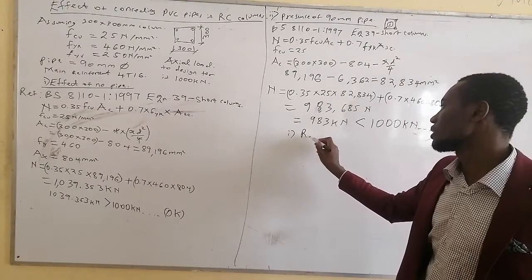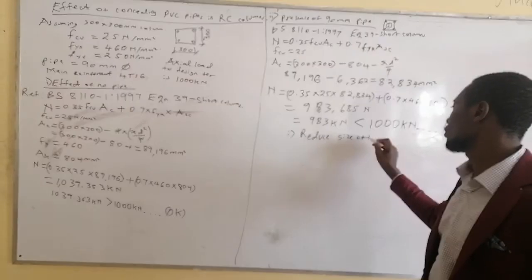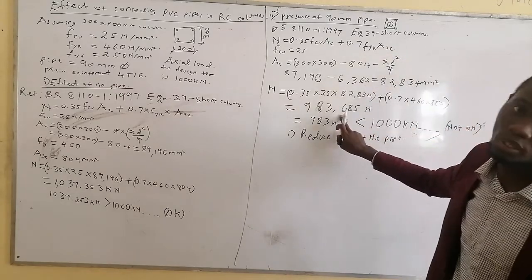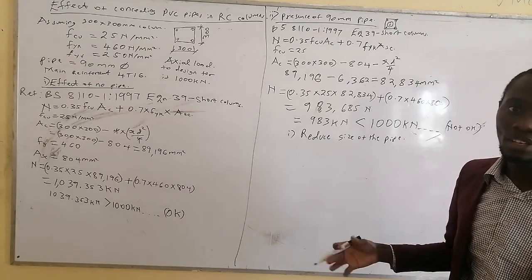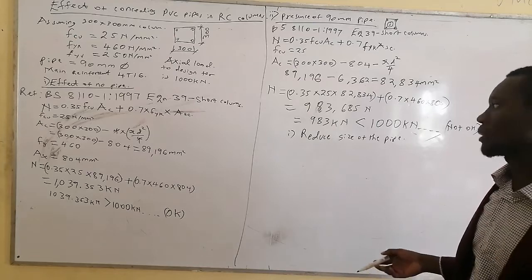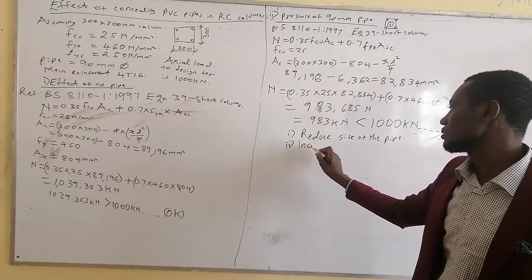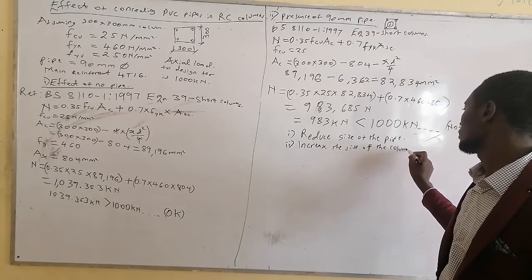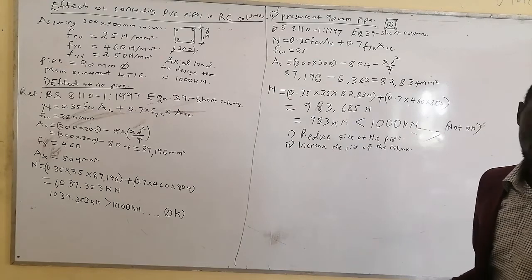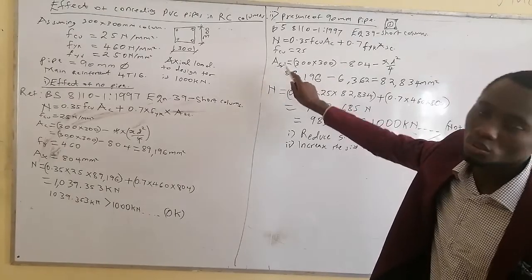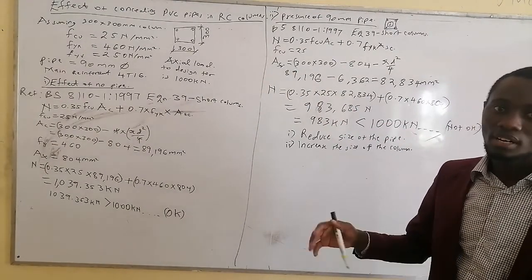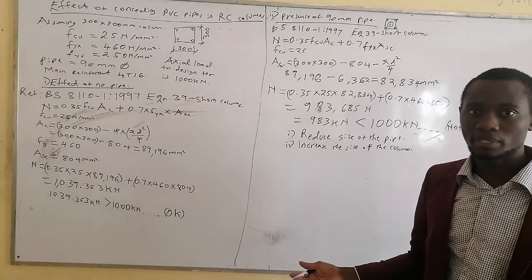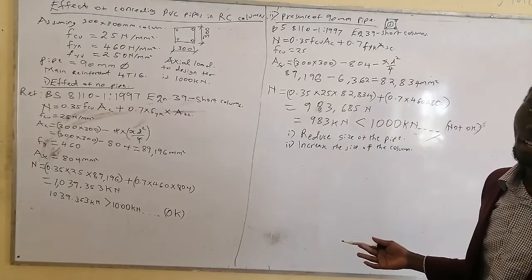Option number one: we could reduce the size of the pipe. It was 90 mm — we can try 60 mm, and this will increase the load capacity of the column because it gives a greater cross-sectional area of concrete. Option number two would be to increase the size of the column. If we have maybe a 400 by 300 mm column, then it will increase the cross-sectional area and give a greater allowance, so we can use the 90 mm pipe.